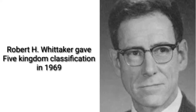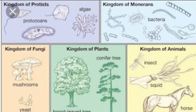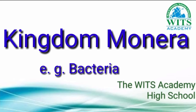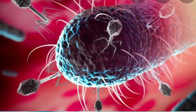Robert Howard Whittaker एक scientist थे। उन्होंने living organisms को classify किया था into different kingdoms, in 1969. उन्होंने kingdoms को classify किया। हमारे पास पांच kingdoms हैं: Kingdom Bacteria, Kingdom Protista, Kingdom Fungi, Kingdom Animalia, और Kingdom Plantae.